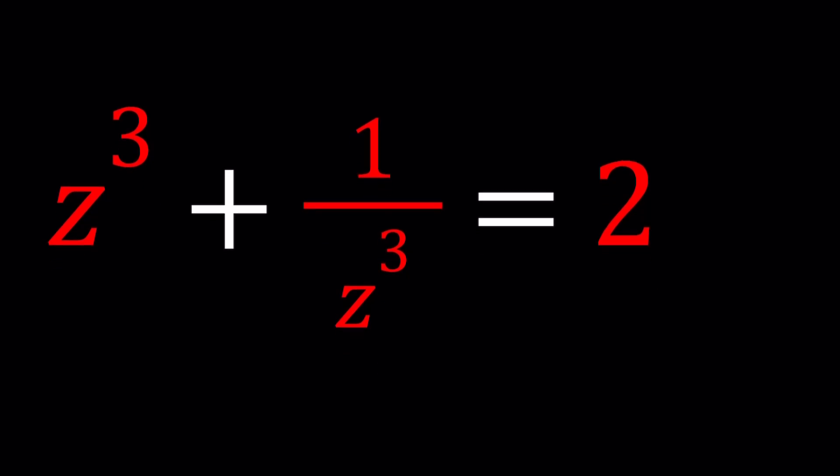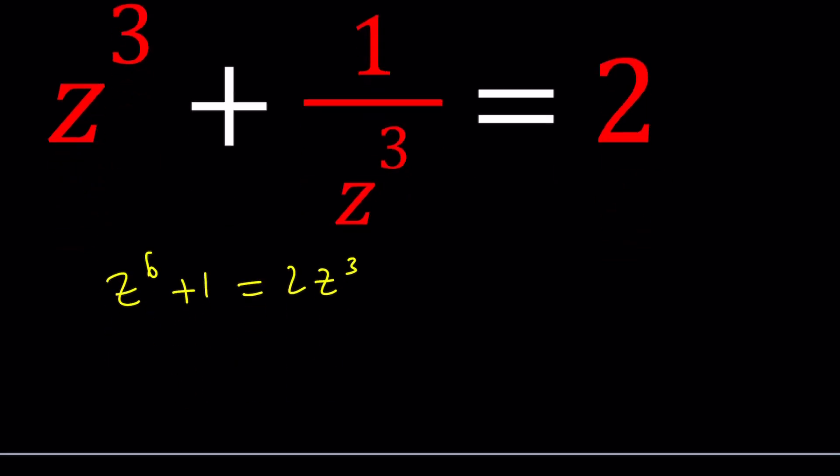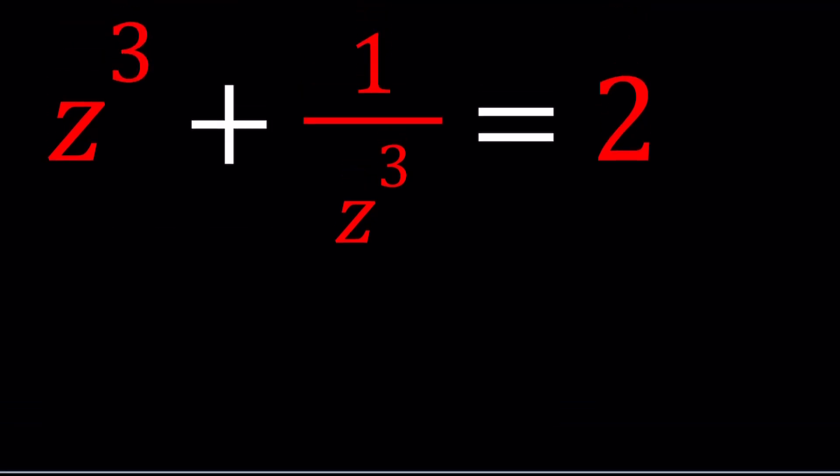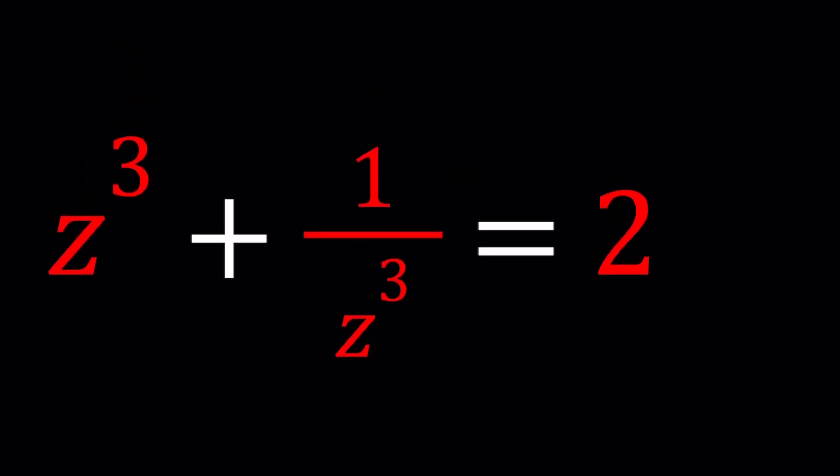Because if you make a common denominator, you're going to get z to the 6th power plus 1 equals 2z cubed, right? And then from there, we can proceed. Let's leave it at that because we'll probably get back to this later. I'm going to be presenting two methods. We're looking for z values, right? This is z cubed plus 1 over z cubed equals 2.